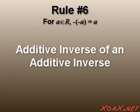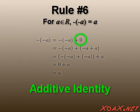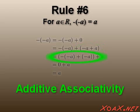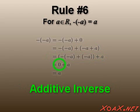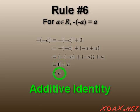The sixth rule is the additive inverse of an additive inverse. This begins with the additive identity. Next, we use additive inverses. Then we use additive associativity. After this, we use additive inverses again. Finally, we finish with the additive identity.